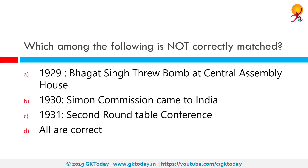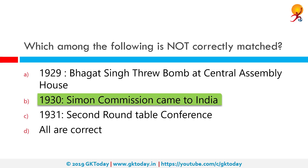Which among the following is not correctly matched? Among the given options, option B is incorrect because the Simon Commission came to India in 1928.